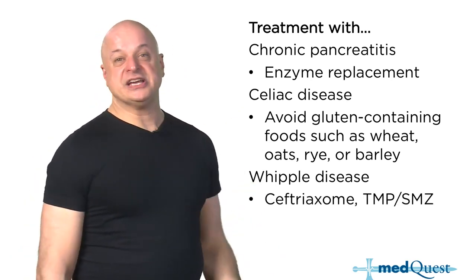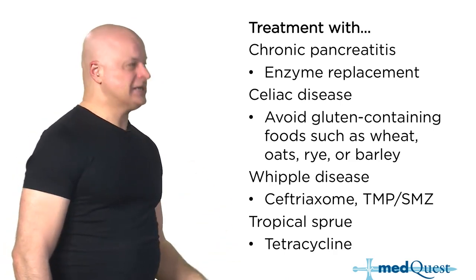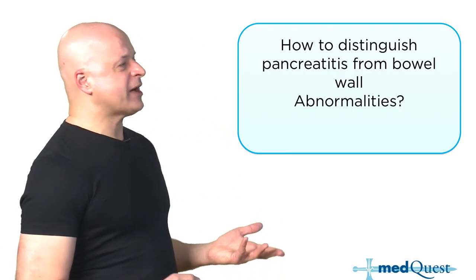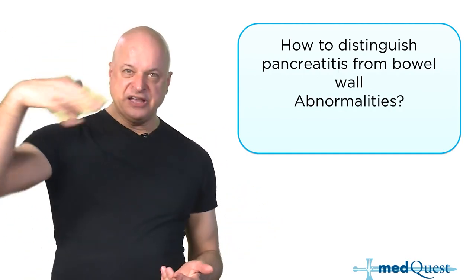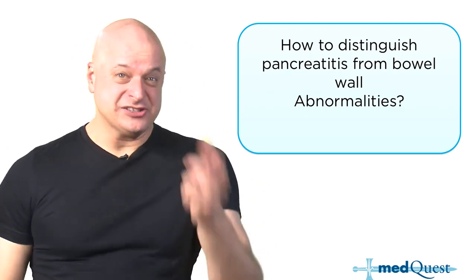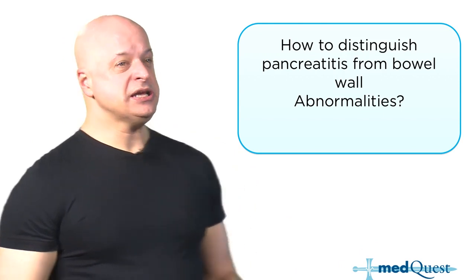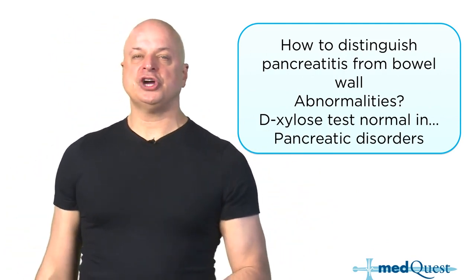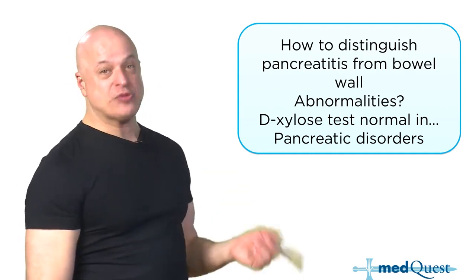Whipple's disease and tropical sprue are treated with antibiotics because they are organisms — doxycycline or tetracycline class. How do you distinguish pancreatic enzymatic deficiency from bowel wall abnormality? The D-xylose test — D-xylose is normal when you have chronic pancreatitis because you don't need digestive enzymes to absorb D-xylose, a tagged five-carbon sugar that, if your bowel wall is intact, goes right into your urine.